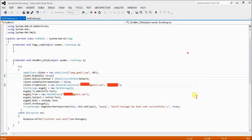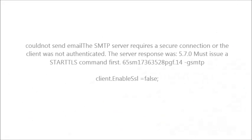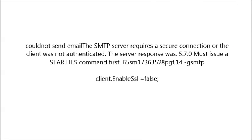During this email process, a lot of errors can show. The first error is: 'Could not send email. The SMTP server requires a secure connection or the client was not authenticated. The server response was 5.7.0.' This happens when client.EnableSsl is set to false. Always keep EnableSsl equal to true, not false — otherwise this error will show.